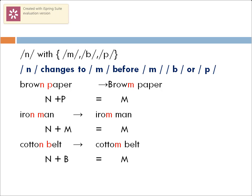Another case is the sound /n/ changing to /m/ whenever it comes before /m/, /b/, or /p/. So 'brown paper' actually sounds like 'browm paper,' 'iron man' sounds like 'irom man,' and 'cotton belt' comes out as 'cottom belt.' The sound /n/ is assimilating with /m/, /b/, or /p/ and coming out as the sound /m/.